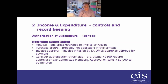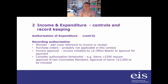You might want to consider authorization thresholds — maybe something over £500 requires the approval of two committee members, or maybe approval of items over £2,000 should be minuted. This is not set in stone and it's not in any constitution as far as I'm aware, but it might be something you'd like to consider as good practice.